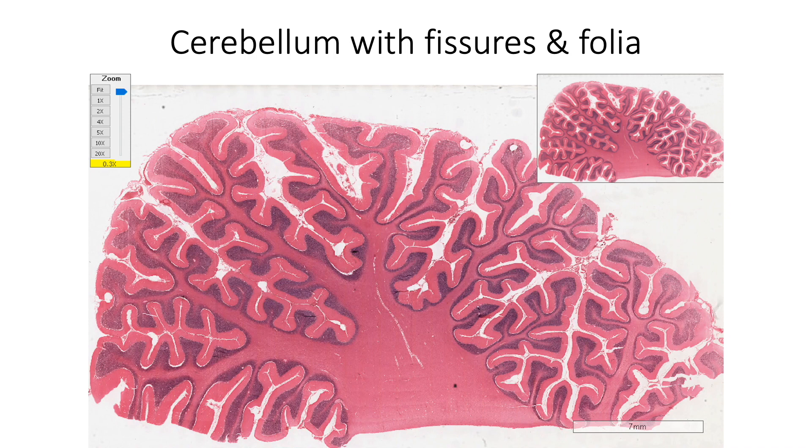Like any other part of central nervous system, cerebellum is also covered by three layers of meninges. In this section of cerebellum under low power magnification, we can see the surface depressions or fissures shown by the arrows separating the folia.